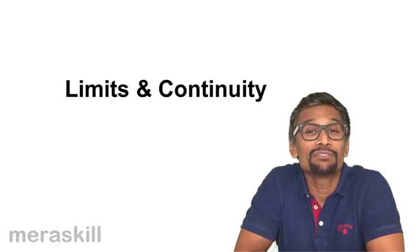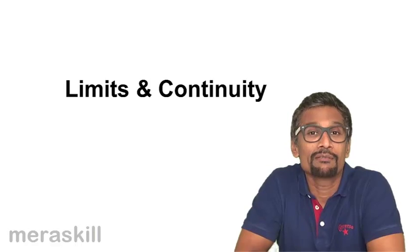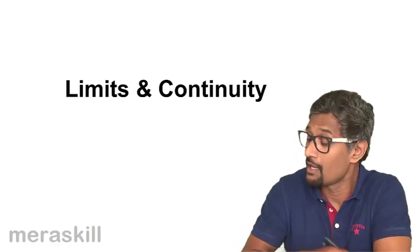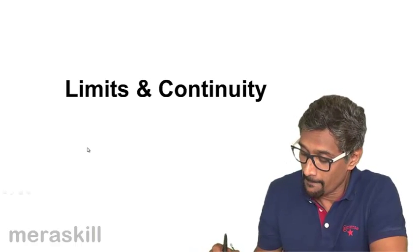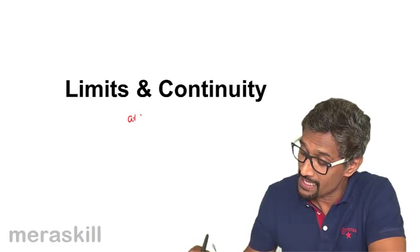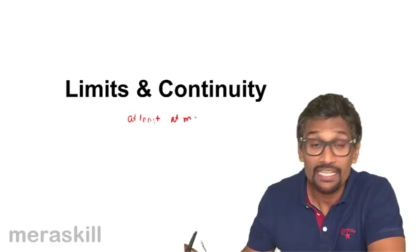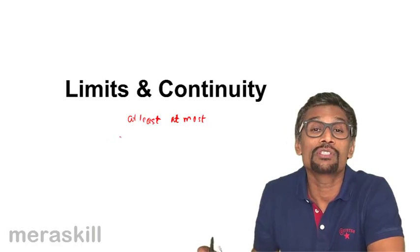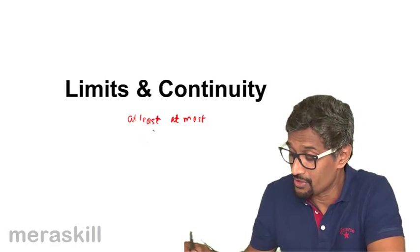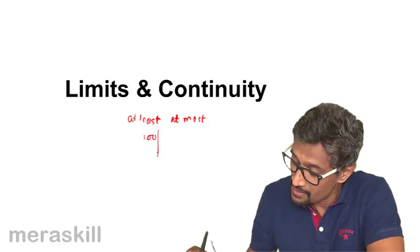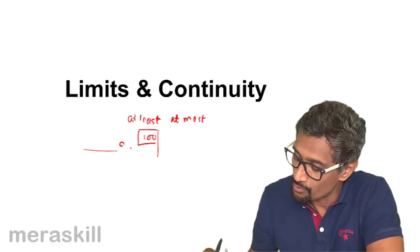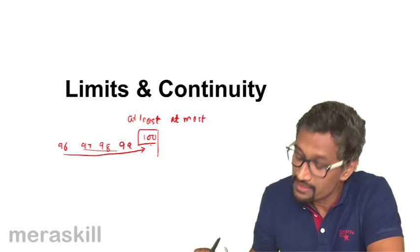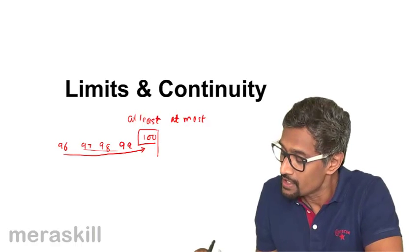Limit and continuity is something which even a layman is very familiar with. These are words you come across — for example, words like 'at least' and 'at most' indicate limits. Say you can buy at the most 100 grapes. So you can have 100 — that is the limit — and 100 can be approached: you may have 99, 98, 97, or 96 grapes. From here you are approaching this limit of 100, getting closer and closer until you reach the limit.